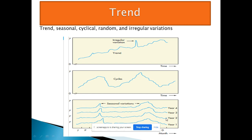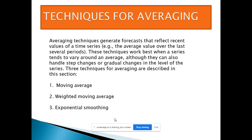If you plot your data yearly — year one, year two, year three, year four — for example, sales value by month: January, February, March — every year you can see that at certain times there is a pickup in sales, and then it will be down. Depending on this trend, you can forecast your data.